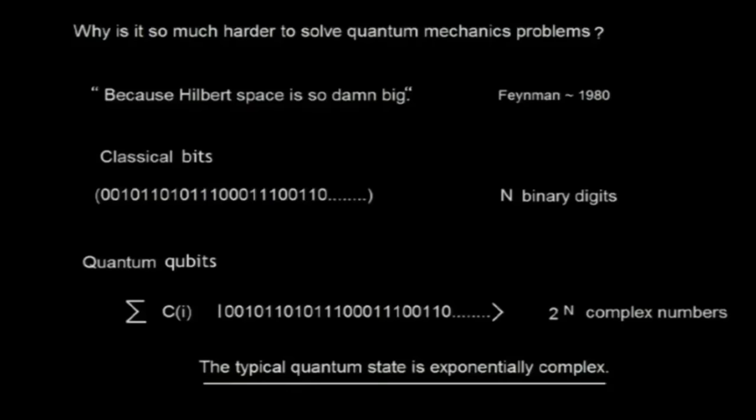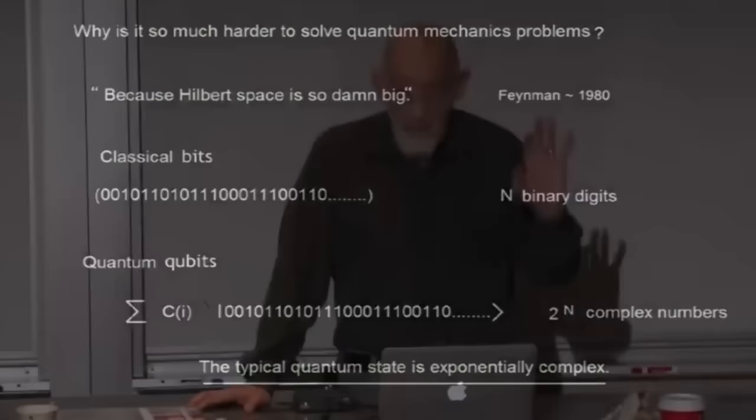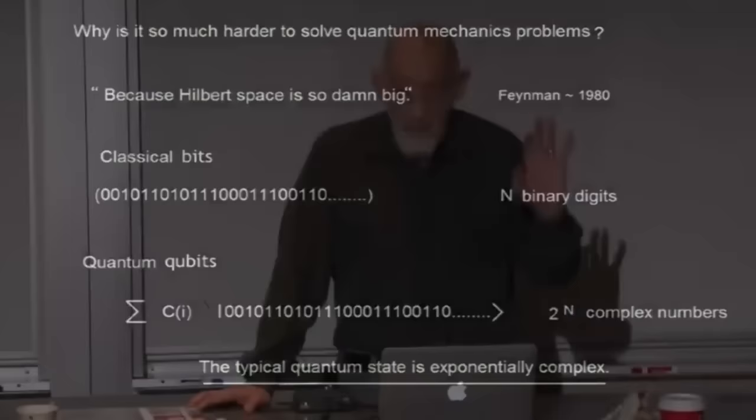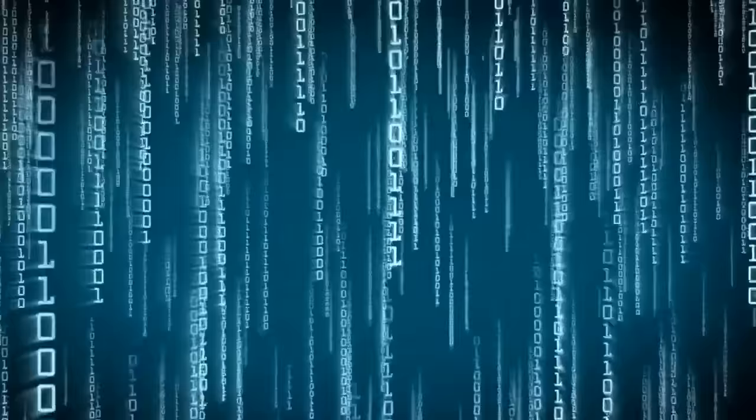Let me give an example. There are many systems which can be described by bits—bits of information like inside your computer. A state of such a system is typically described by a string of zeros and ones. Supposing there are a thousand bits: you can write down the configuration just in binary digits, you can write them on about a page. Not too bad.